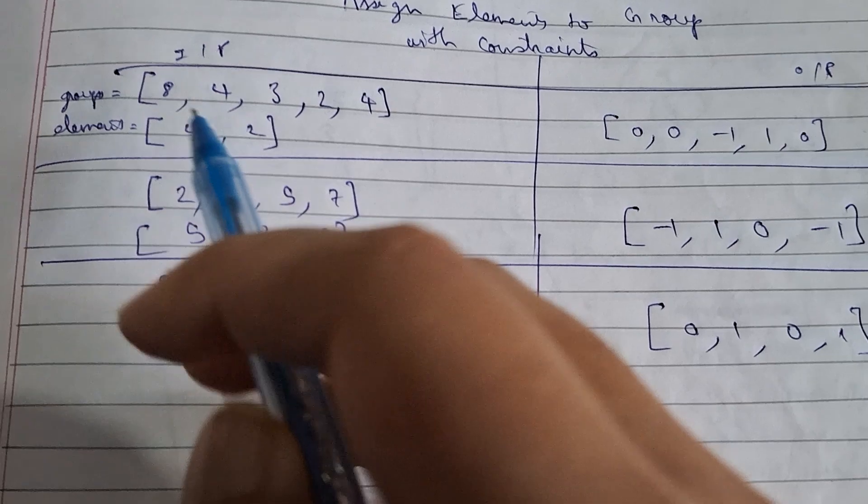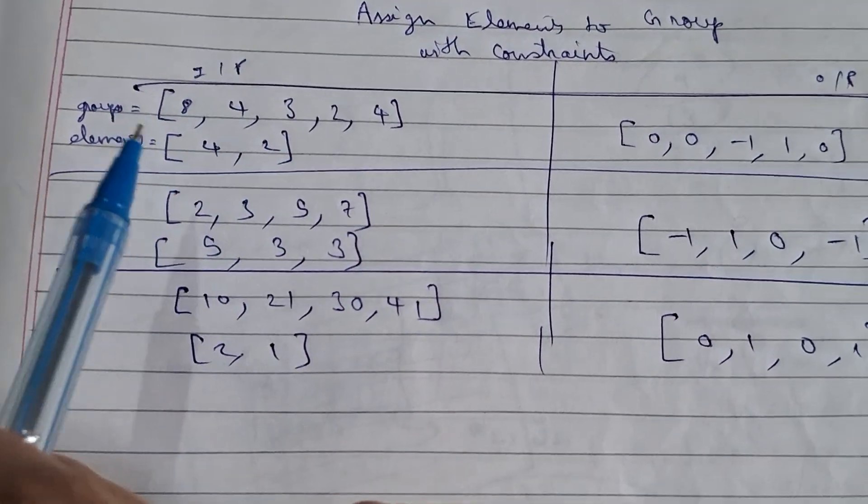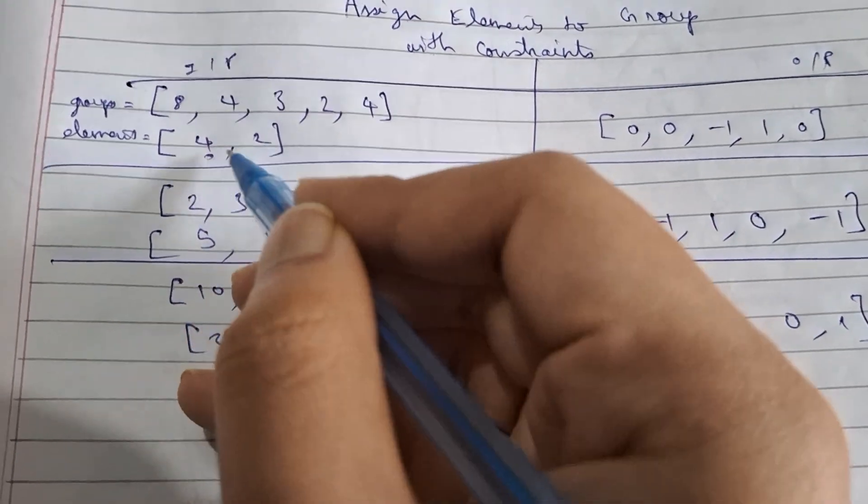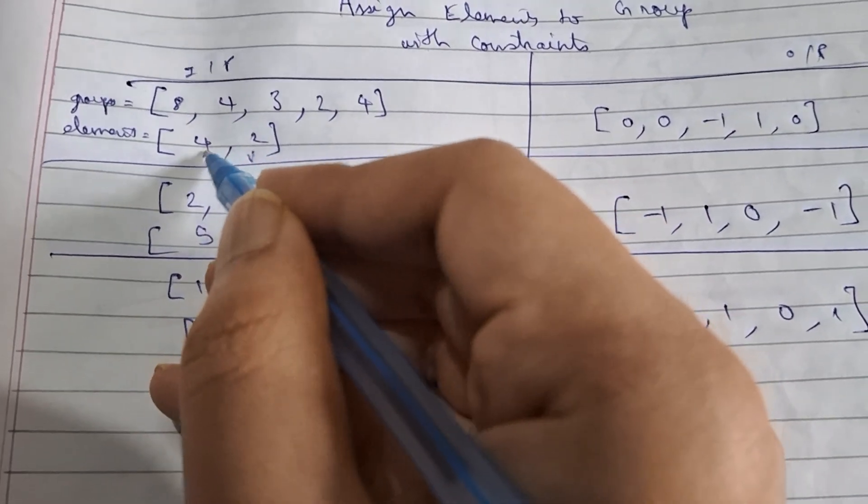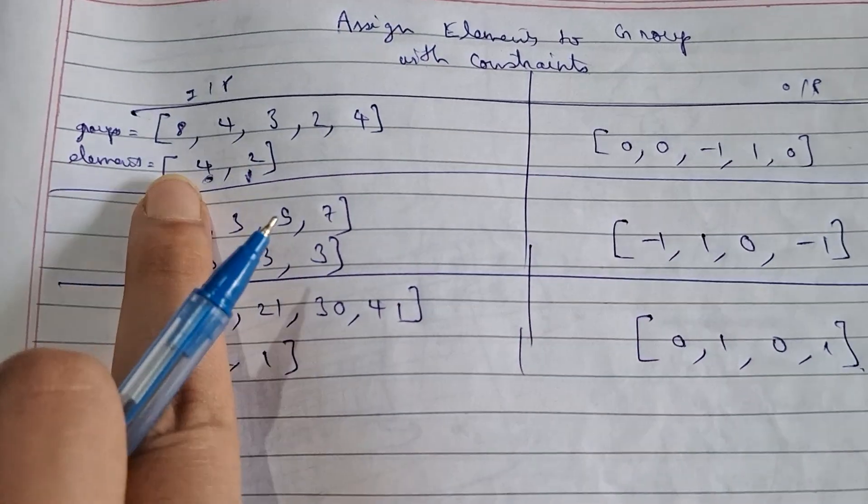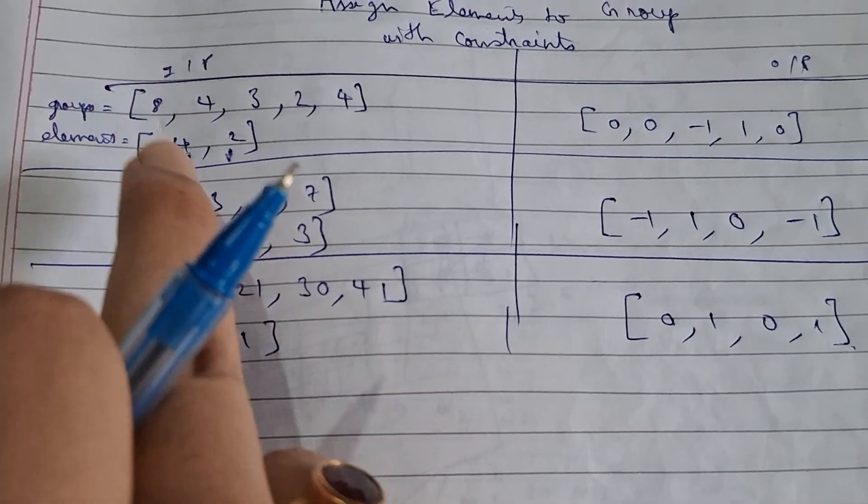For the elements there are various indices: 0, 1, that's how arrays are indexed. Now for every group element we have to check what is the minimum index of the number which divides this number. So over here, 4 and 2 both divide 8, but what is the minimum one? It is 0.